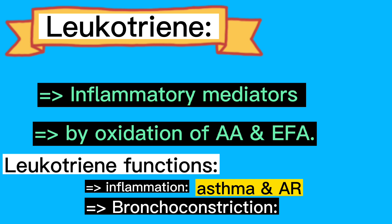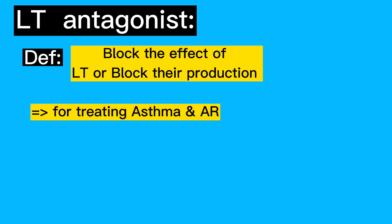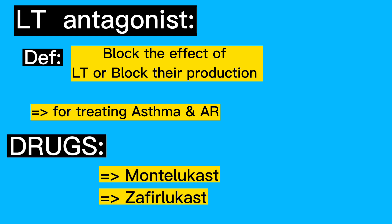So the main function of leukotrienes is to induce the symptoms of asthma and allergic rhinitis. There are two types of drugs: leukotriene receptor antagonists, which block the effect of leukotrienes at their receptors — these include montelukast and zafirlukast — and drugs that block leukotriene production.